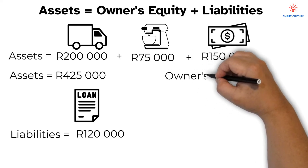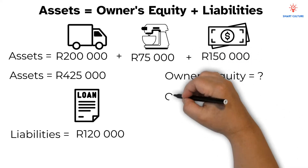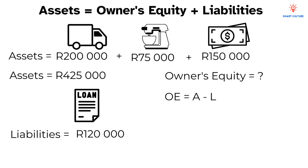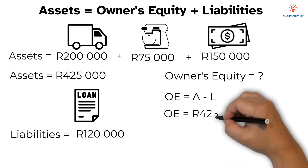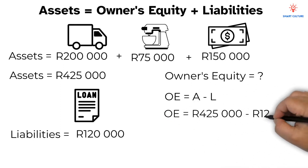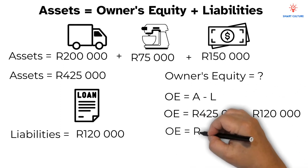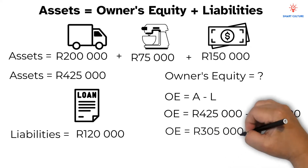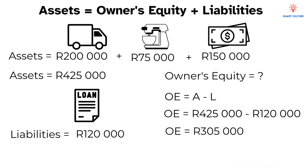To find the owner's equity, we subtract the liabilities from the assets. Therefore, the owner's equity is equal to 425,000 rand minus 120,000 rand, and that is equal to 305,000 rand.